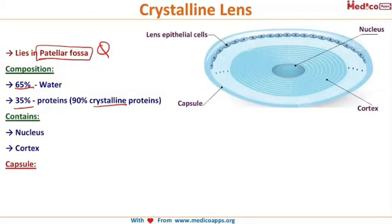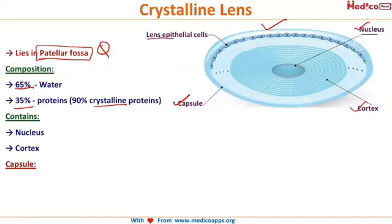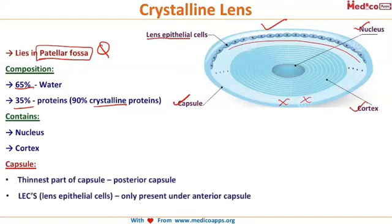The structure of the human crystalline lens has a center called the nucleus, surrounded by the cortex. The outermost structure is the capsule, which surrounds the cortex. The lens epithelial cells are only present anteriorly and absent posteriorly, which makes the posterior capsule the thinnest part of the lens capsule.